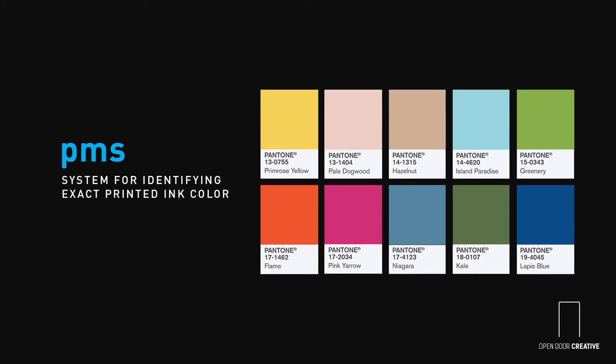The PMS is a system for identifying exact ink colors. Each Pantone color is identified by a number and a letter. Pantone colors are used so that you get the exact color you see in the Pantone book instead of how it may appear on screen.